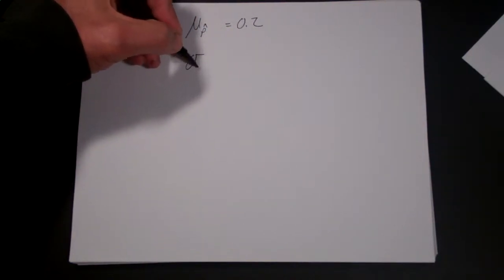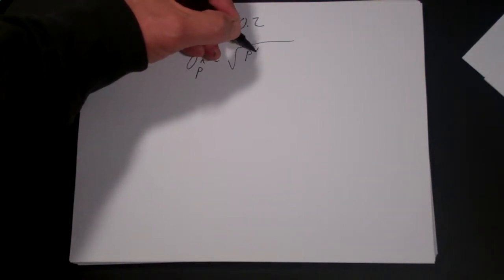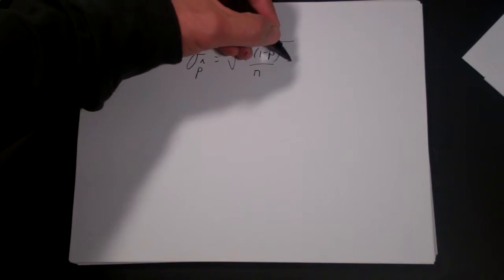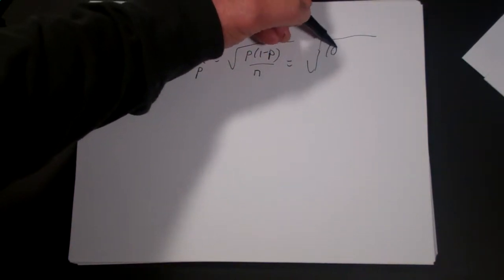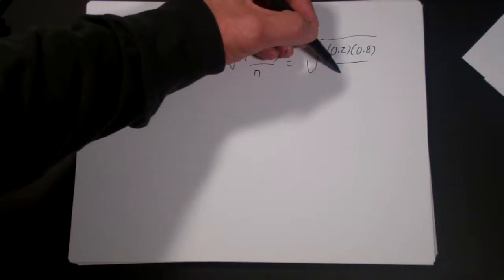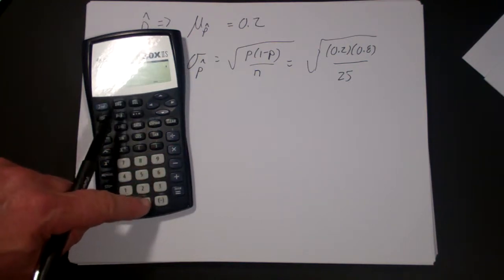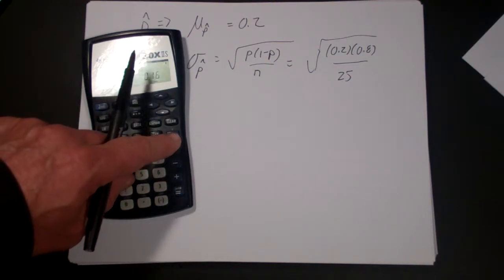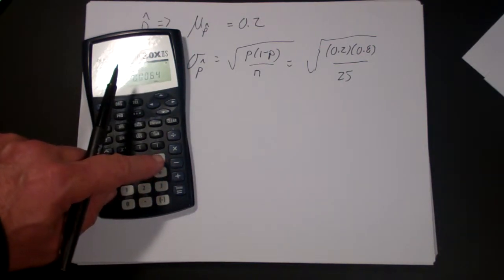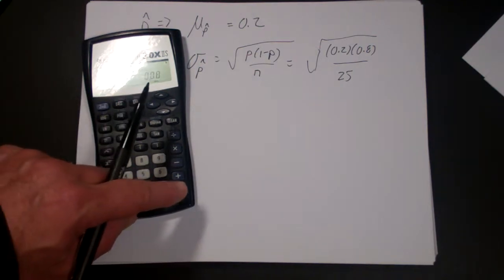So let's start from there. We know that p hat, in this case, mu of p hat will be 0.2. And sigma p hat will be equal to the square root of p times 1 minus p over n. Let's just plug the numbers in: the square root of 0.2 times 0.8 over 25. Let's use a calculator to see what number that is. That's 0.2 times 0.8, divided by 25, and then take the square root of that. We get 0.08.